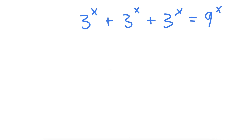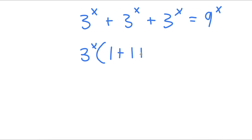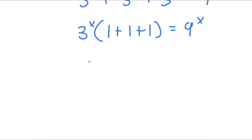In this problem, I have 3 to the power of x plus 3 to the power of x plus 3 to the power of x is equal to 9 to the power of x. I'm going to first factor out 3 to the power of x. So I have 3 to the power of x times (1 plus 1 plus 1) is equal to 9 to the power of x. Simplifying inside the parentheses gives 3 to the power of x times 3 is equal to 9 to the power of x.